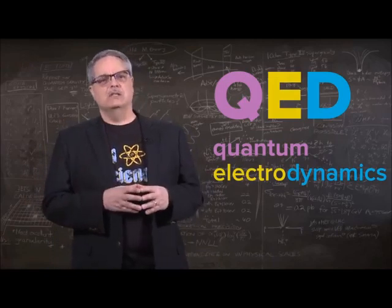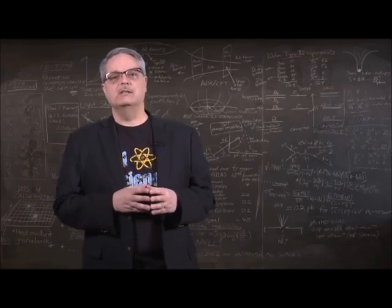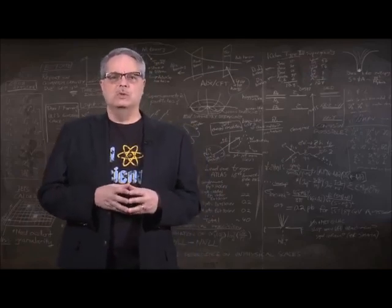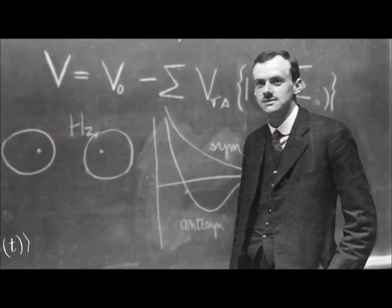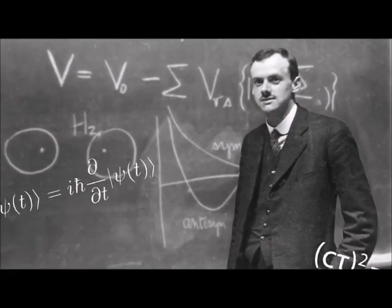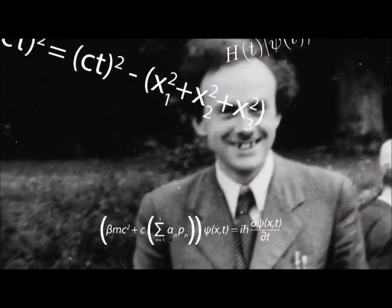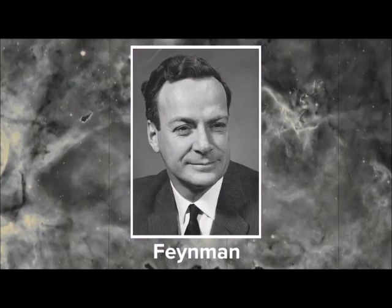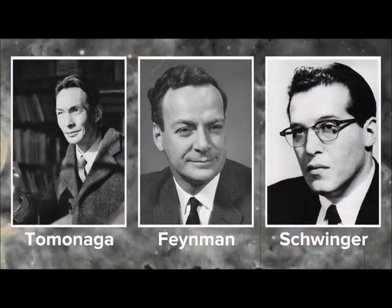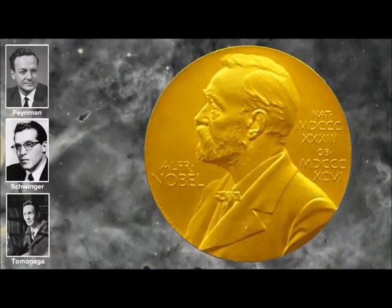They say that success has many mothers, and that is true of QED as well. Well, fathers in this case. The first step forward was made in 1928 by Paul Dirac when he successfully wed quantum mechanics and Einstein's theory of special relativity. Along the way, there were many other contributors, but the ones who got the explicit credit for the theory were Richard Feynman, Julian Schwinger, and Sin Itiro Tomonaga. They shared the 1965 Nobel Prize in Physics for their insights.